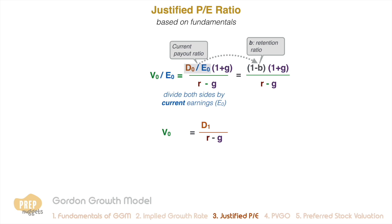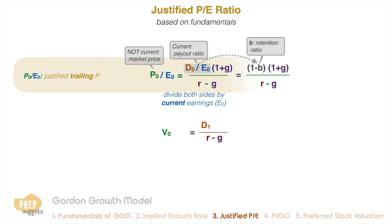On the left-hand side, we have the value of the stock divided by the current earnings. To make it more consistent with PE ratio, the notation for value here is often switched to P0, though you should be clear that this does not refer to current price. We call this the justified trailing PE ratio for the stock.